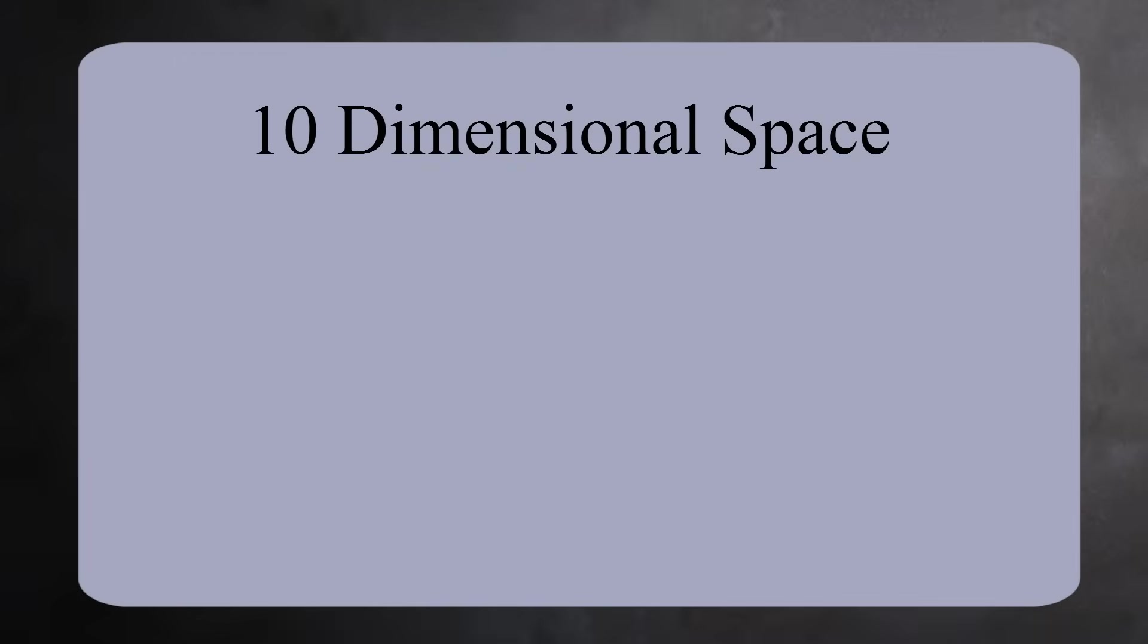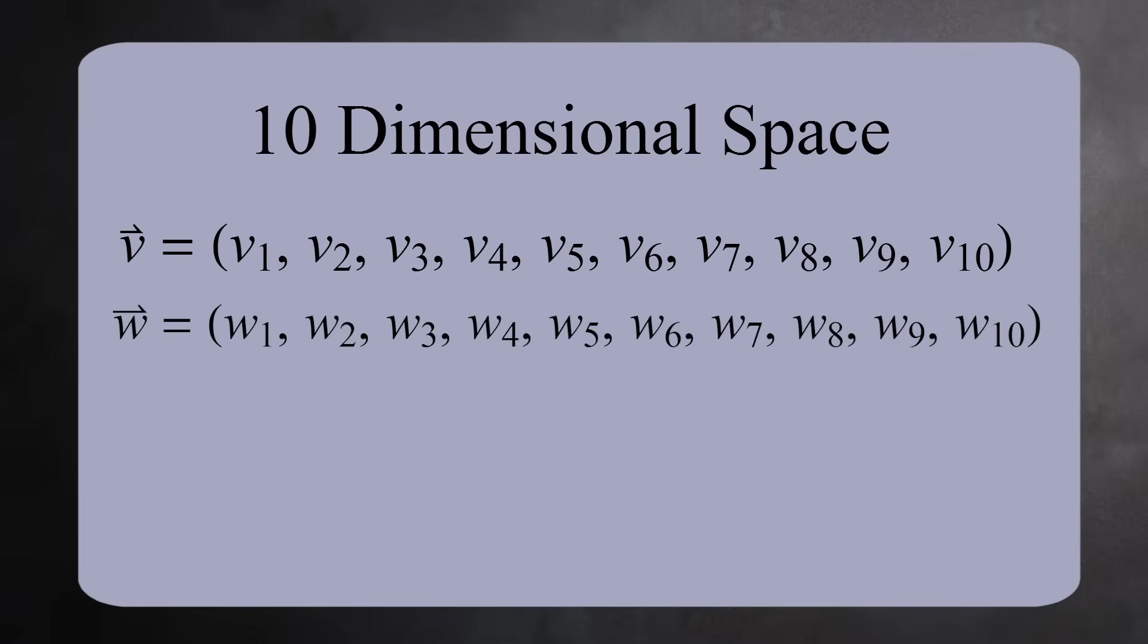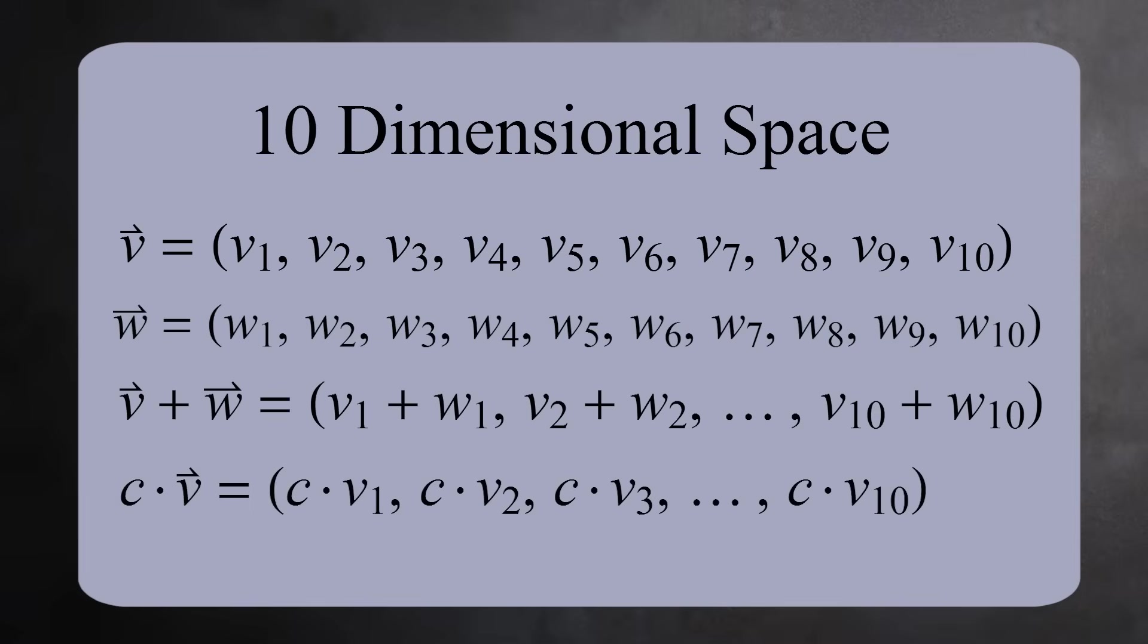For example, imagine an alternate universe with ten dimensions. Taking inspiration from two- and three-dimensional vector spaces, we could suggest that in this universe, forces could be described by a list of ten numbers. And like before, you can add and scale vectors. We would call this ten-dimensional space.